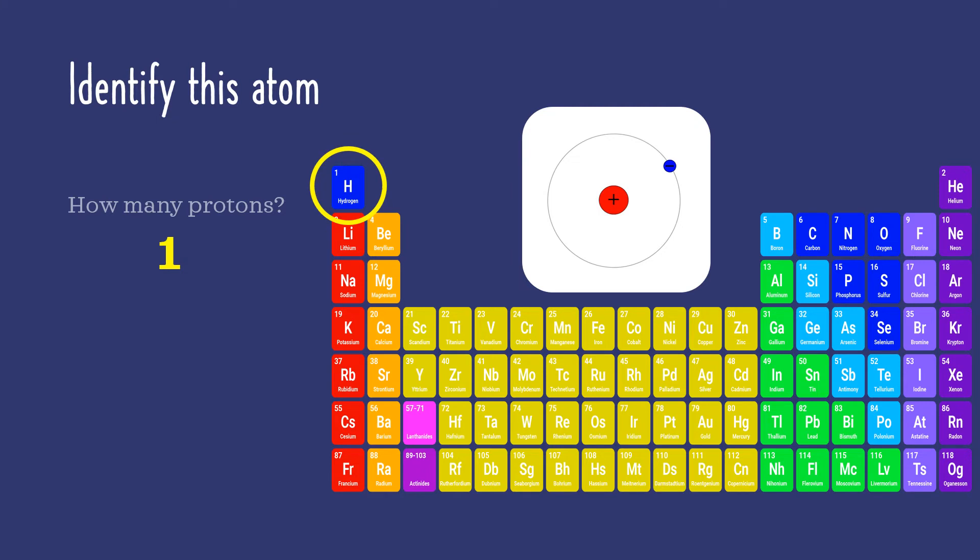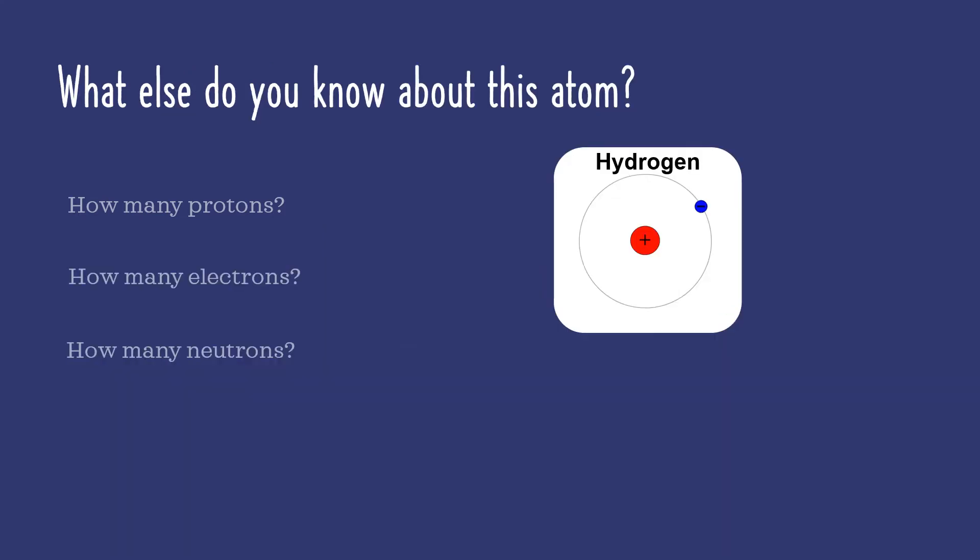The number of protons in an atom is called the atomic number. What else do you notice about hydrogen? You see that there's one proton in the atomic nucleus. And that little blue dot is an electron hanging out in the electron cloud. Do you see any neutrons? They would be in the nucleus and I don't see any.